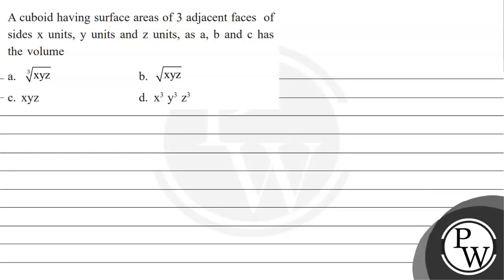Hello, let's see the question here. The question says that a cuboid having surface areas of three adjacent faces of sides X units, Y units, and Z units as A, B, and C has the volume.